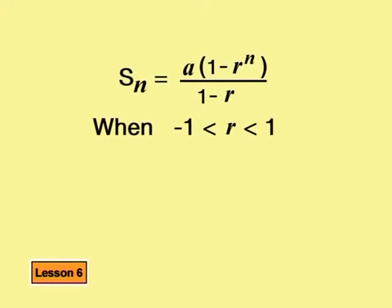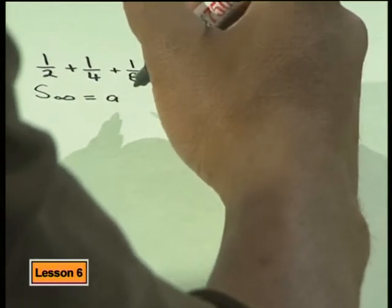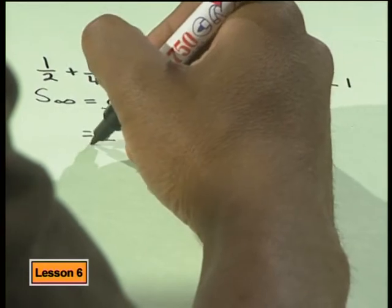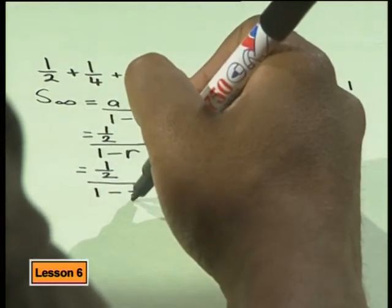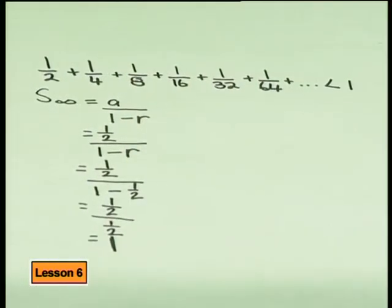Let me summarize what we have seen in general terms. Given the sum formula for a geometric series, in those cases where r is between negative one and one, and n is very large — as n tends to infinity — the sum approaches a divided by (1 minus r), and we say the sum to infinity equals a over (1 minus r). Let's test this formula for our example: a is the first term, which is one half, and r is also one half. This gives one half over (1 minus one half), which is one half over one half, which equals one — just as we predicted.